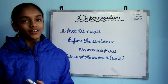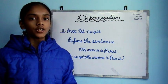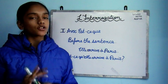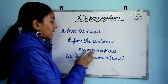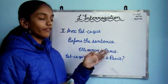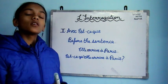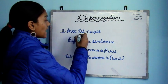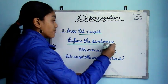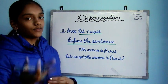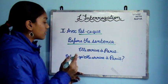The next form of interrogation is est-ce que. To do interrogation with est-ce que, you simply add est-ce que in front of the sentence — it comes before the sentence, not after, not in between, but before the sentence.